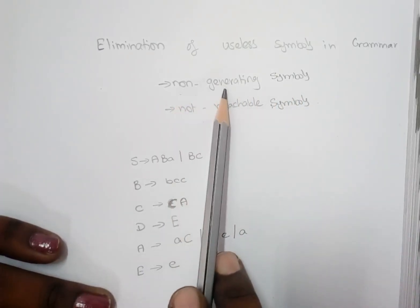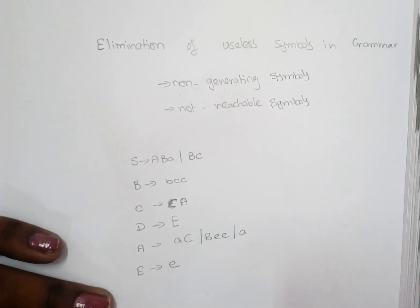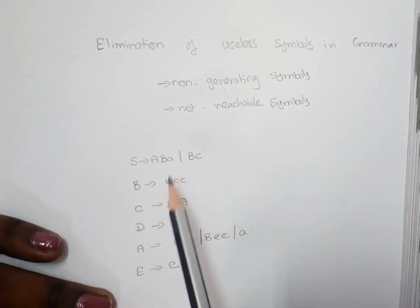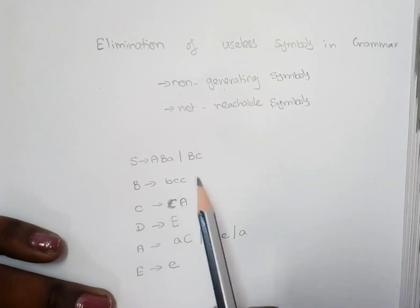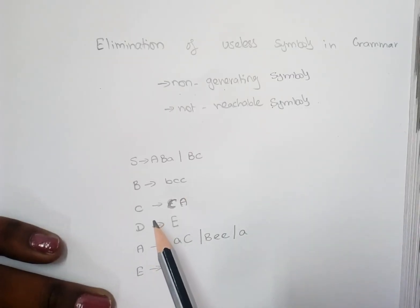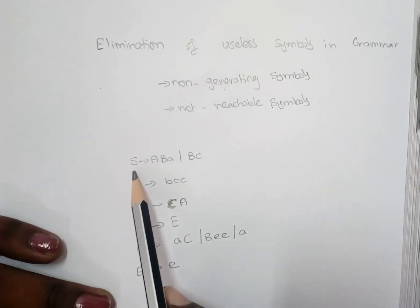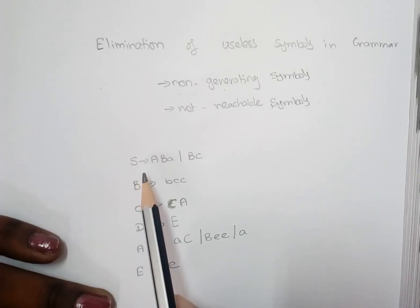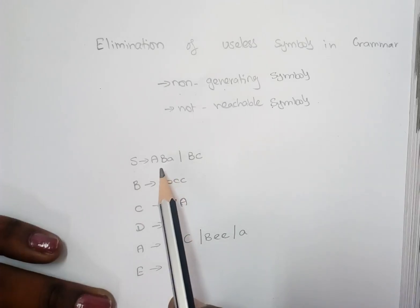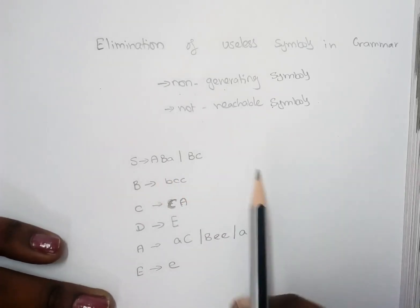A non-generating symbol is one which doesn't generate to some set of terminal symbols. Whenever we are using a grammar, the main ultimate aim is to derive a parse tree or derive some inputs. So if for some variable, on some substitution, it never ever ends or never ever leads to some set of terminal symbols, we call that a non-generating symbol.